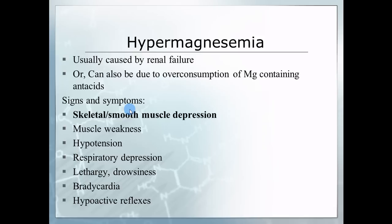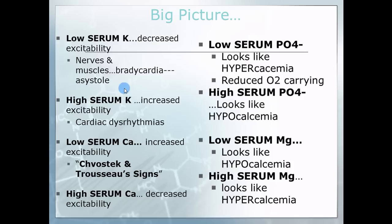Here's the big picture summary: key words to remind you what happens with low or high potassium, low or high calcium, those two physical signs of hypocalcemia, and the phosphate and magnesium relationships. There are no more questions in this video set — we'll talk in the next video.